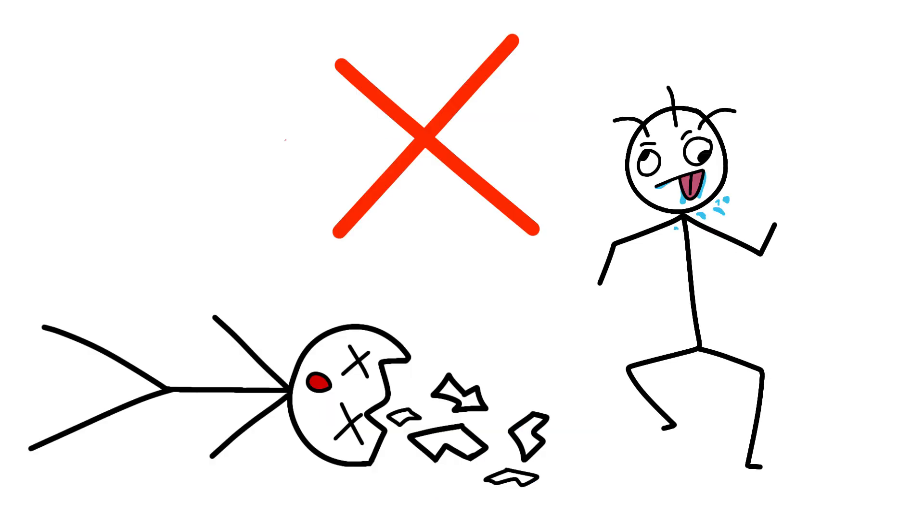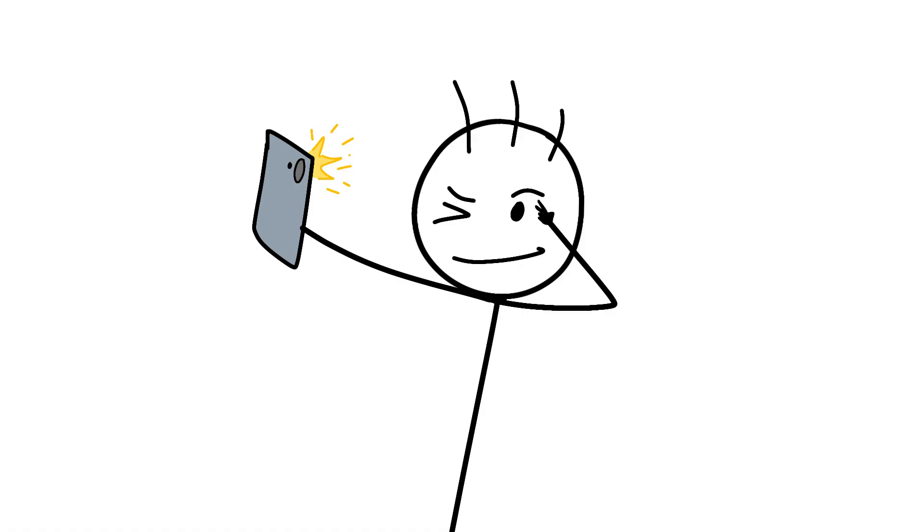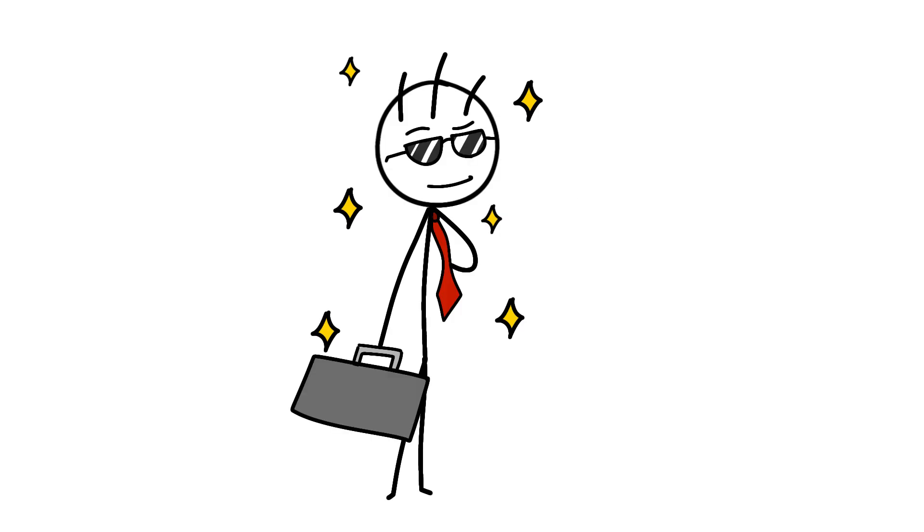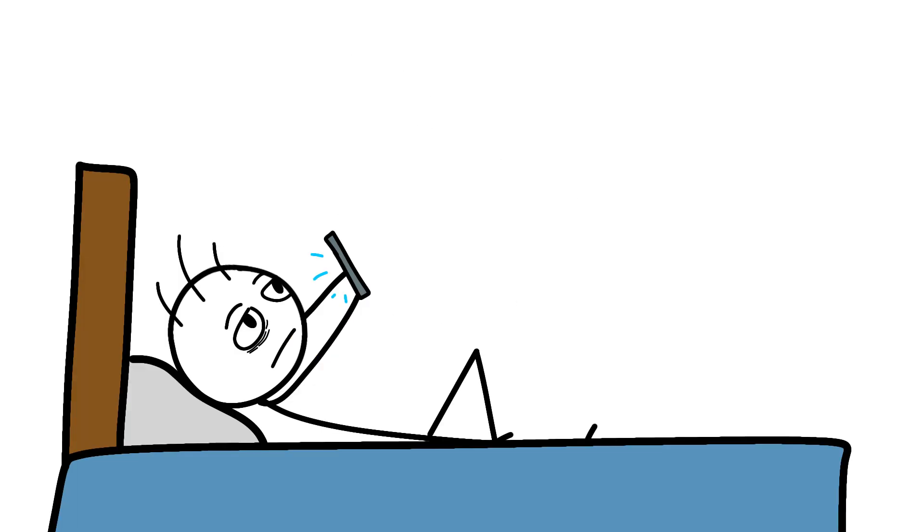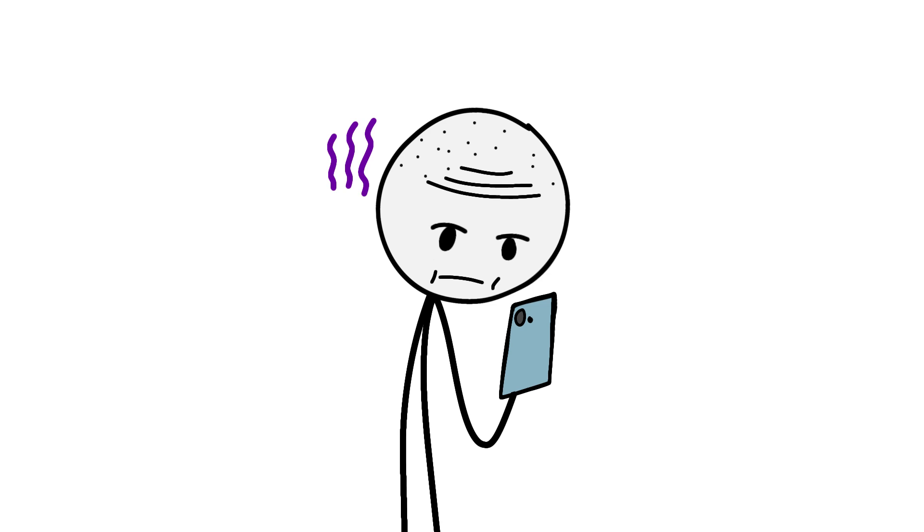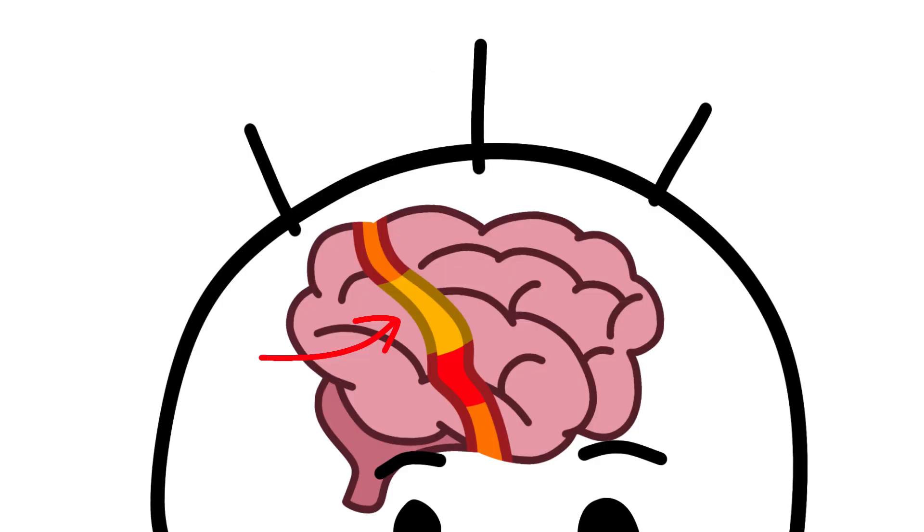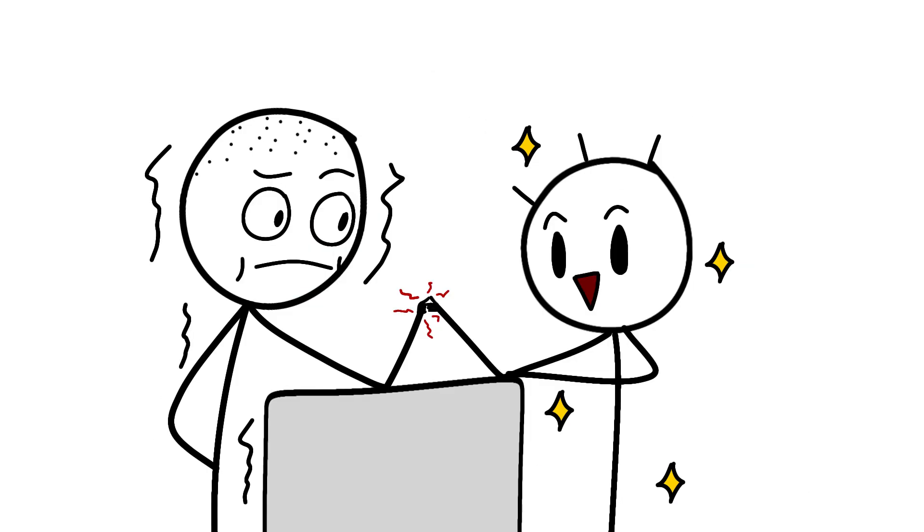They're not broken. They're not stupid. They're neurologically optimized for a reality where information moves at light speed and social hierarchies update every time someone posts a selfie. Whether that optimization will serve them well in adulthood or leave them refreshing their feeds in nursing homes, frantically checking for notifications from the great beyond? Well, check back in 50 years when we have that data. Until then, maybe worry less about the screen time and more about the fact that your kid's thumb motor cortex could probably beat you at thumb wrestling just from pure neural dedication to the craft.